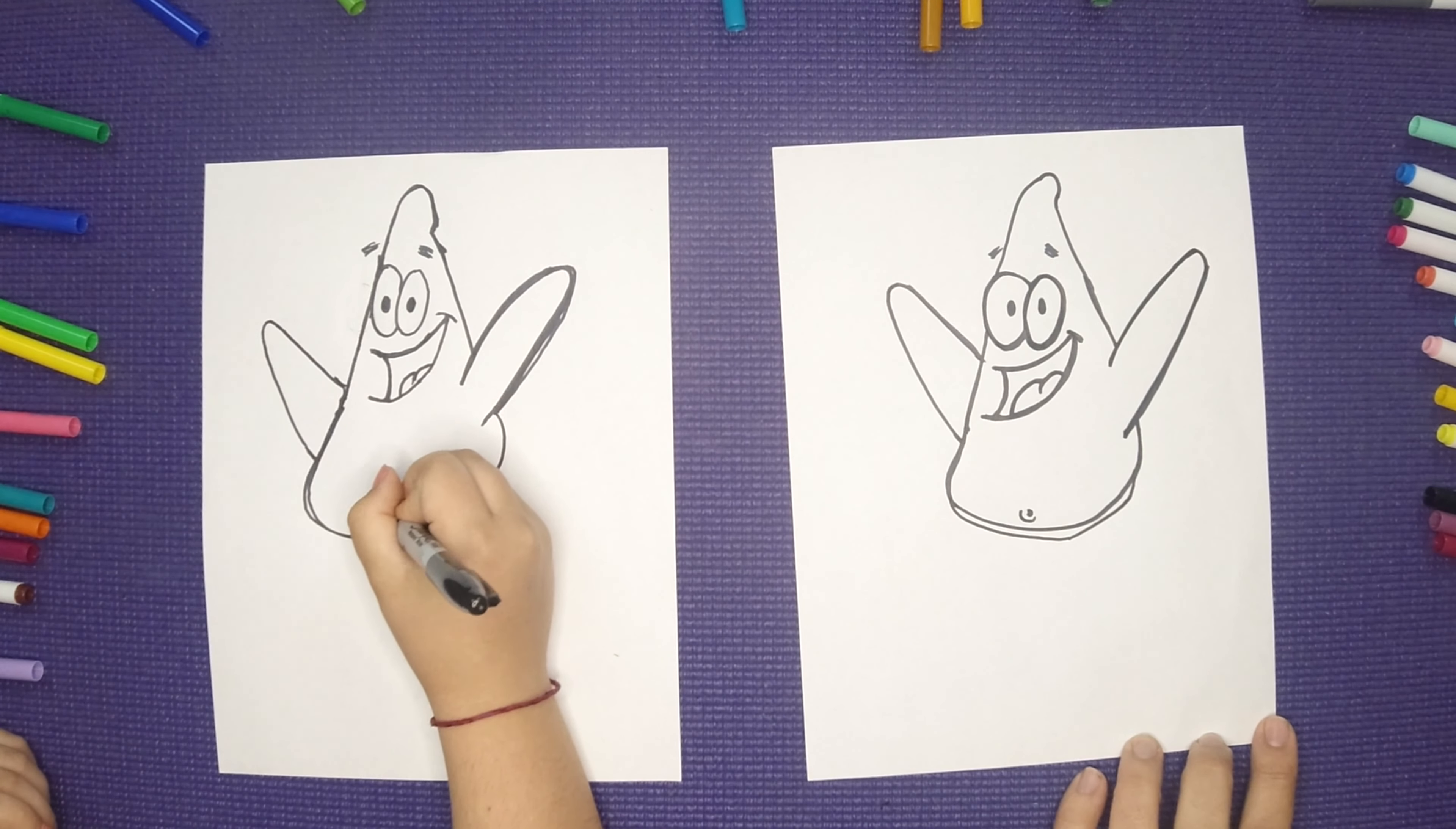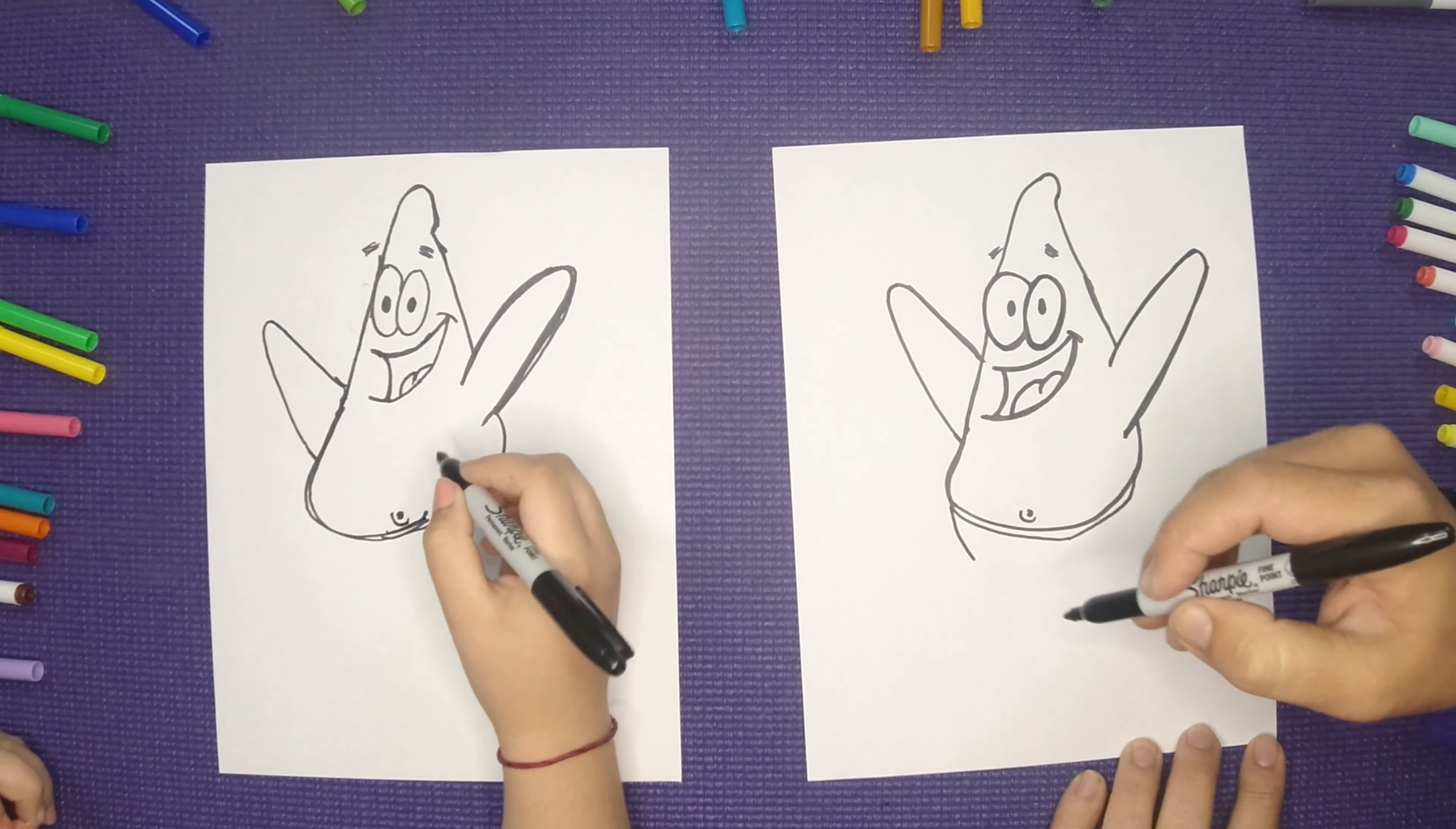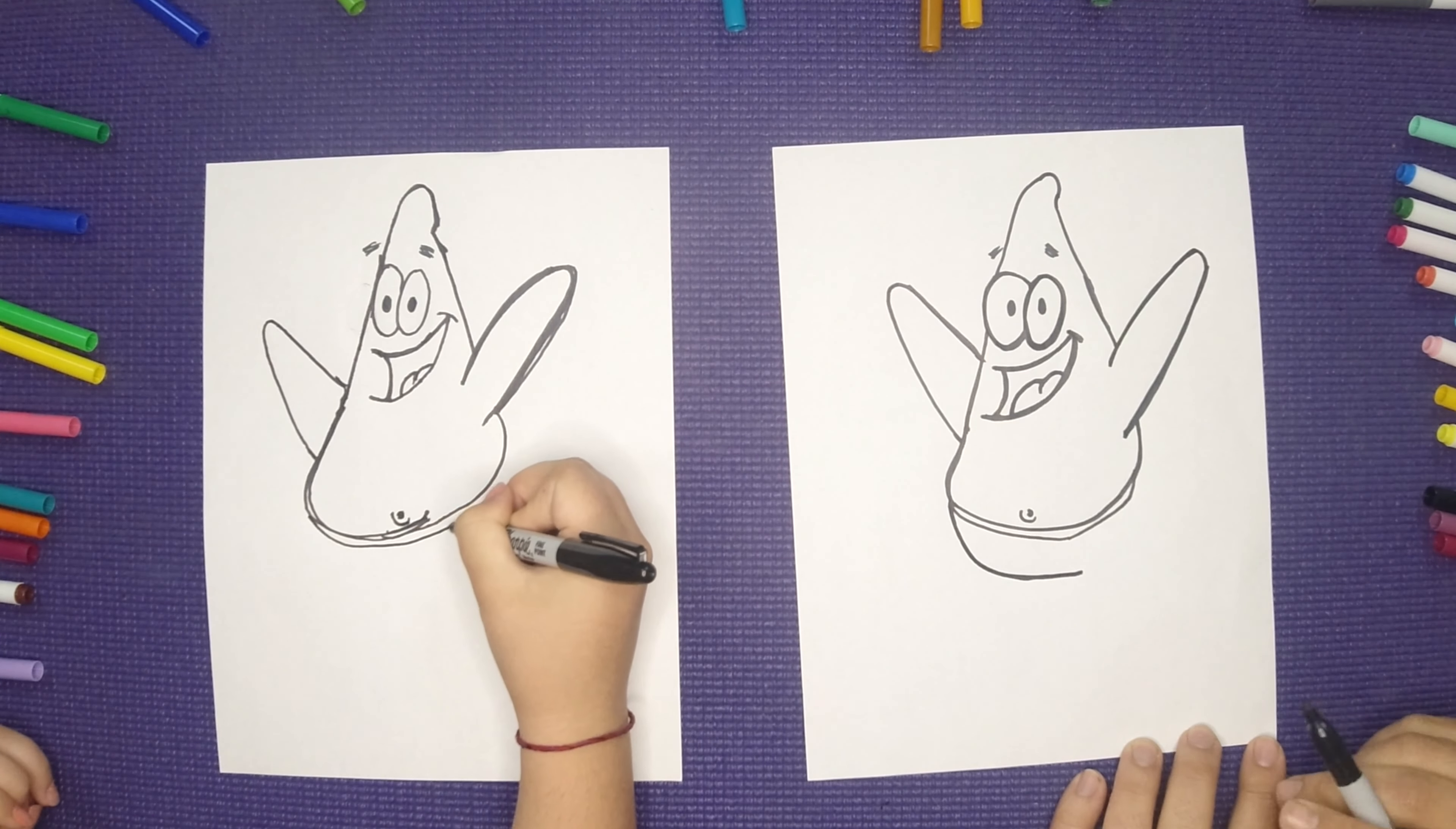Then we're going to go ahead and draw his shorts. So we're going to continue that teardrop shape, but not go all the way across because we got to get that front leg in there.